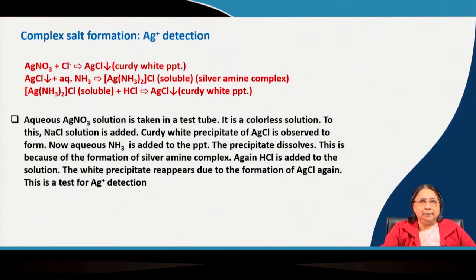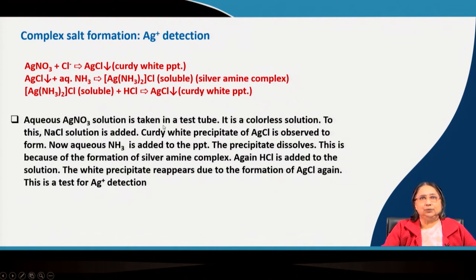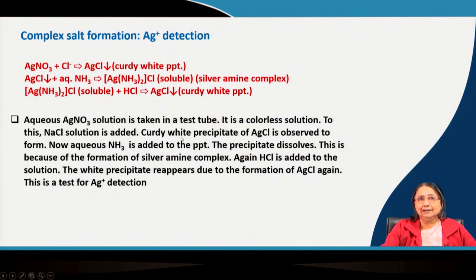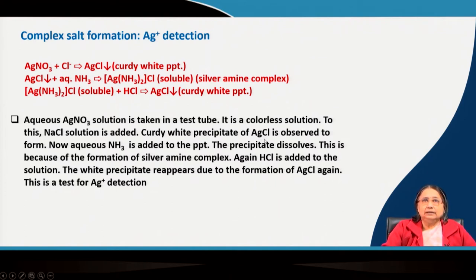A similar thing can happen for silver — this is also a silver ion detection method. You take silver nitrate solution in a test tube; it is colorless. If you add HCl, since it is a source of chloride, chloride will react with silver nitrate to form a curdy white precipitate. If aqueous ammonia is added to the silver chloride precipitate, the precipitate will dissolve due to the formation of a silver amine complex.